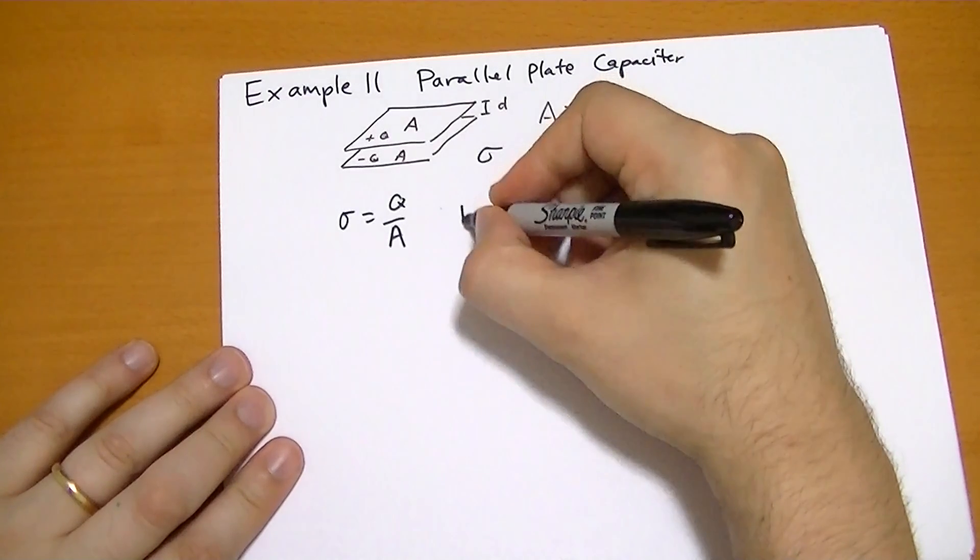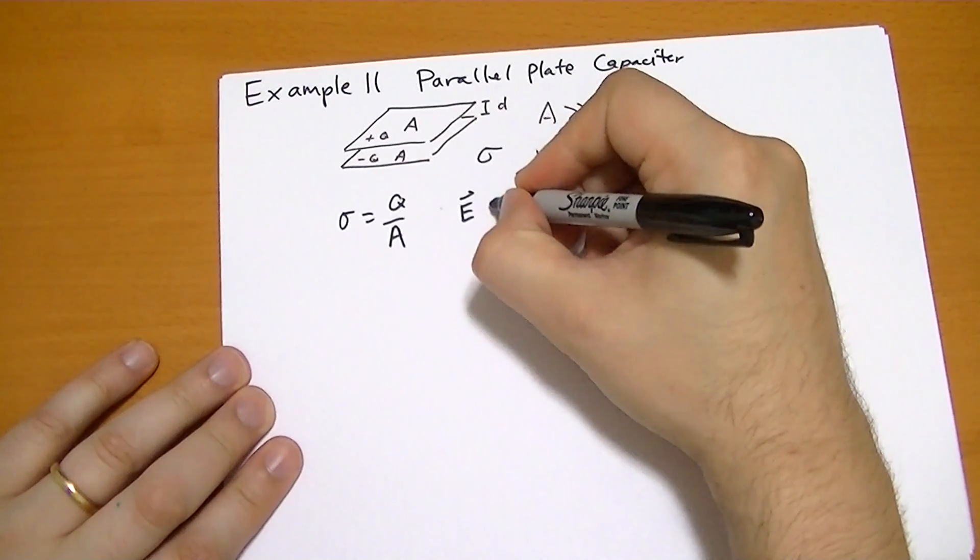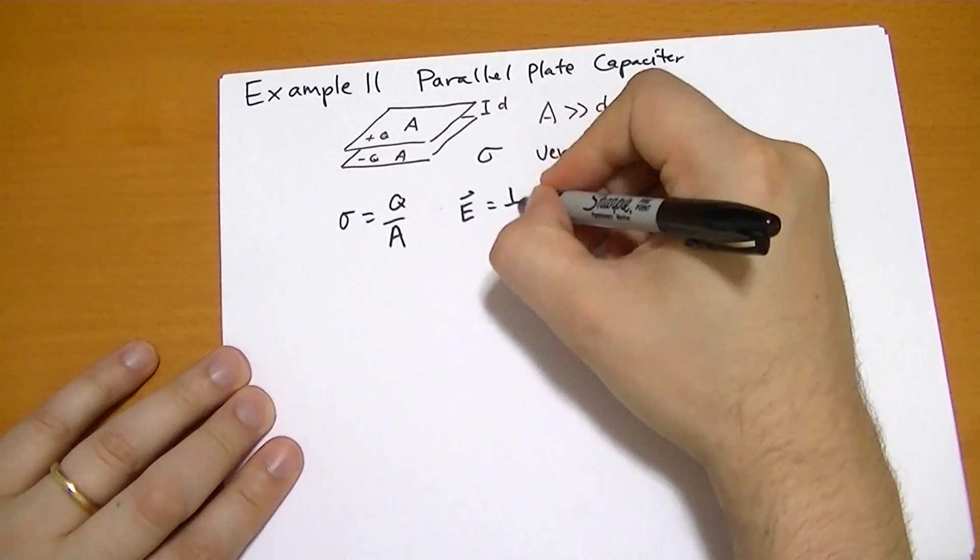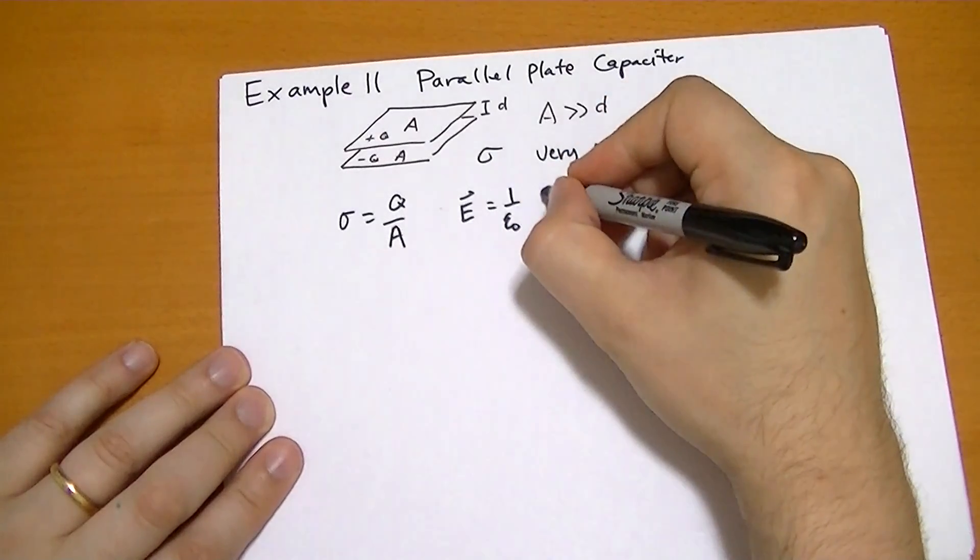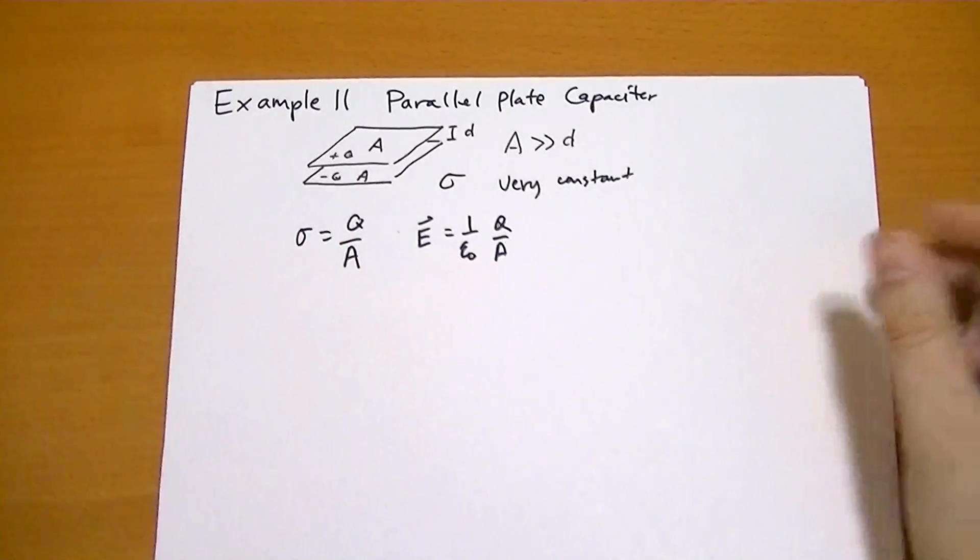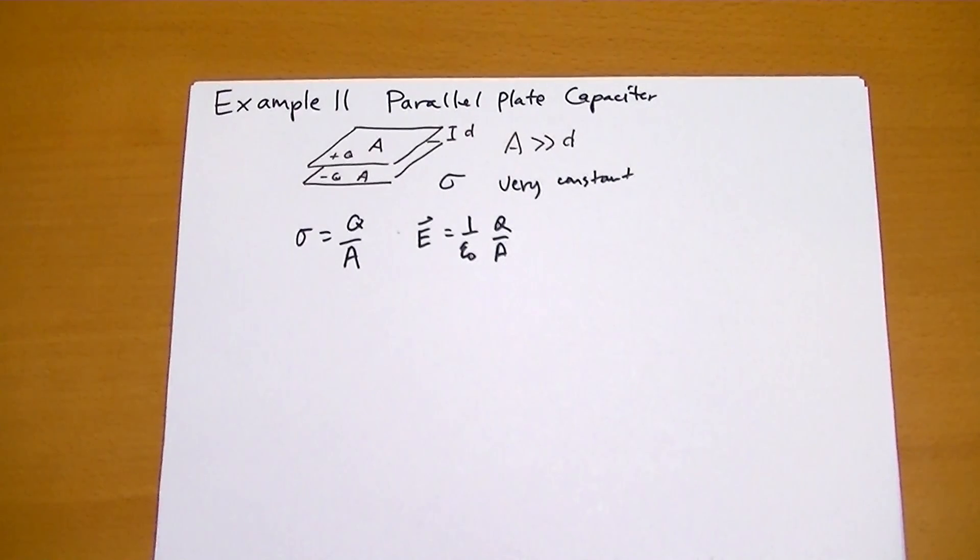So the electric field is equal to 1 over ε₀ Q over A. And where do we get this from? Well, back in Example 5, we used a pillbox Gaussian surface to figure out what the electric field is due to a surface.